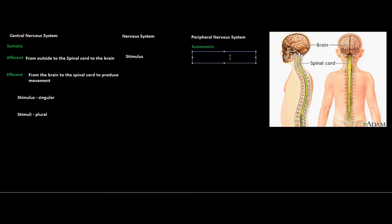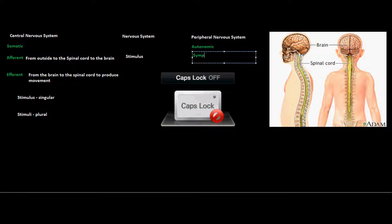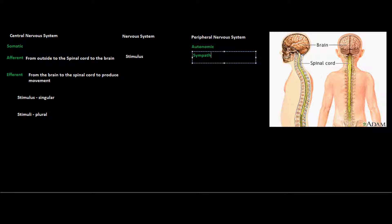Moving on to the peripheral nervous system. The peripheral nervous system is the autonomic division of the nervous system, and this is composed of the sympathetic and parasympathetic divisions. These are the two subdivisions of the peripheral nervous system.